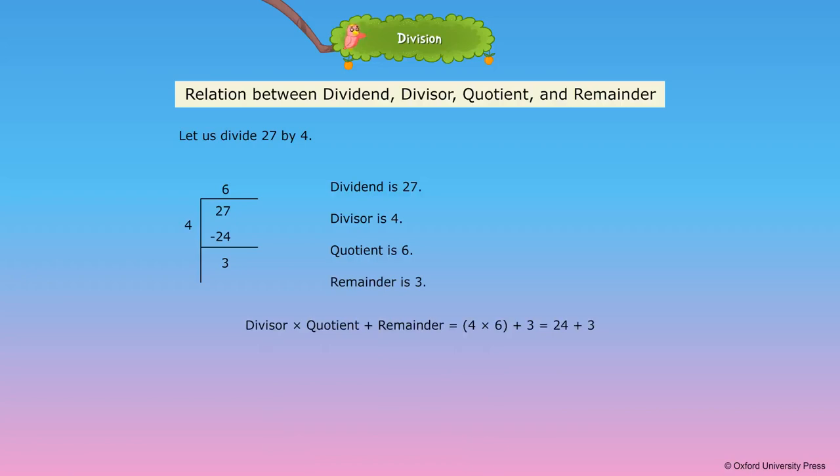Divisor multiplied by quotient plus remainder is equal to 4 into 6 plus 3. That is equal to 24 plus 3. That is equal to 27, which is the dividend. So divisor into quotient plus remainder is equal to dividend.